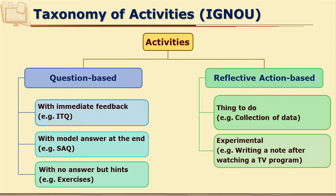When you cannot give model answers, you need to provide some hint for the answer. By reading that hint, the learner can compare whether his or her own answer is right or wrong. All these have specific questions and expected answers. But apart from exercises of questions, answers, and choosing correct answers, we may give learners some activities, some assignments to do, and some projects to undertake.